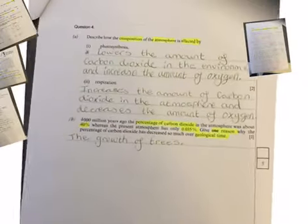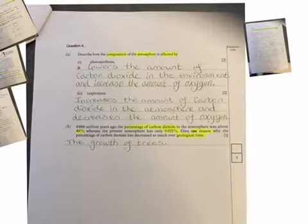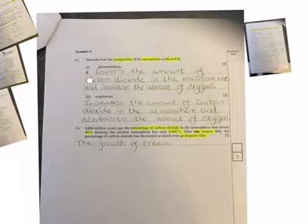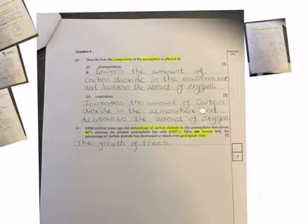Question number four. Describe how the composition of atmosphere is affected by photosynthesis and respiration. Photosynthesis lowers the amount of carbon dioxide in the atmosphere and increases the amount of oxygen. You could have written the equation for photosynthesis, showing the link between biology and chemistry. Respiration increases the amount of carbon dioxide in the atmosphere and decreases the amount of oxygen. You could have written an equation there too.